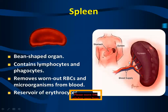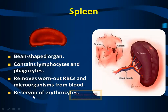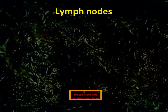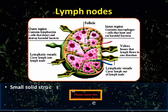The spleen is a bean-shaped organ located on your left side. It contains lymphocytes and phagocytes, and removes worn-out RBCs and microorganisms from the blood. It is a reservoir of erythrocytes — we even call it the graveyard of RBC. Likewise, the lymph nodes are nothing but lymphatic vessels that get bulged in certain areas.